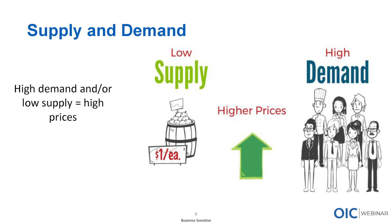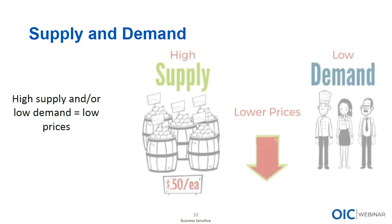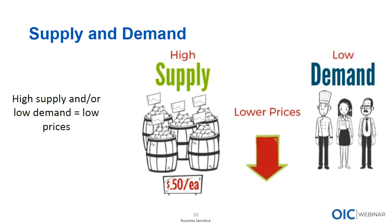Conversely, high supply or low demand decreases prices. If I'm an apple seller with a thousand apples, I'll need to lower prices to get rid of them before they spoil. Or if not many people want to buy, I'll have to lower prices to entice them. This is what we've been seeing with certain stocks that were trading in the mid-teens and shot up to around five hundred dollars — demand was created for those securities and for their options.